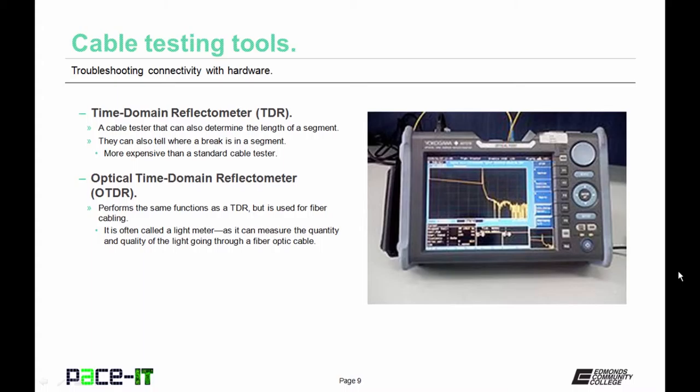Related to the TDR is the optical time domain reflectometer, or the OTDR. They perform the same function as a TDR, but it is used for fiber optic cabling. It is often called a light meter, as it can measure the quantity and quality of the light going through a fiber optic cable.